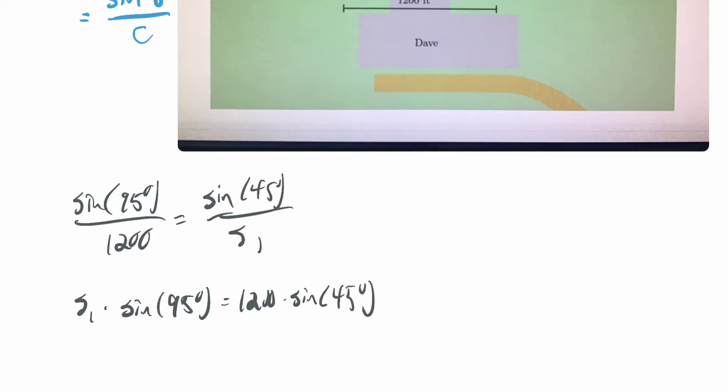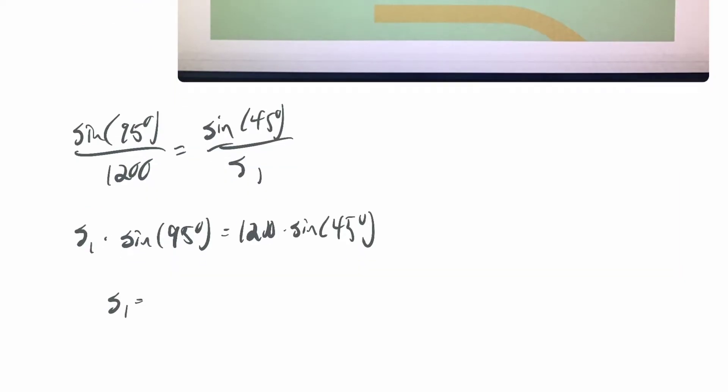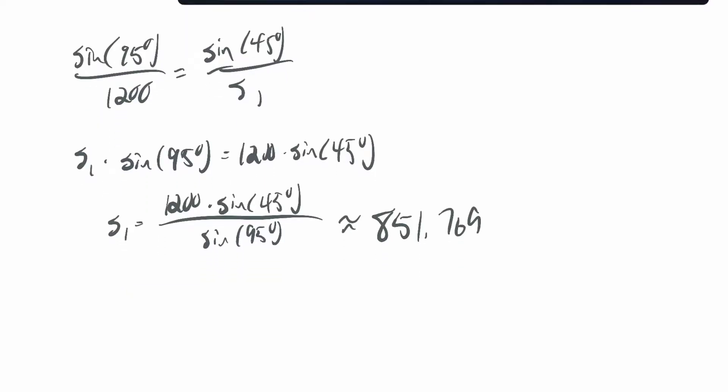So if I cross multiply, I'll get s1 times sine of 95 degrees equals 1,200 times sine of 45 degrees. Then divide by sine of 95 degrees on both sides. So s1 equals 1,200 times sine of 45 degrees over sine of 95 degrees, which is approximately, I'll throw this into a calculator, 1,200 times sine of 45 divided by sine of 95, and I get 851.769. Now, L1 is 500 less than that. So s1 minus 500, which is approximately 351.769 feet. So I found L1, basically 352 feet.